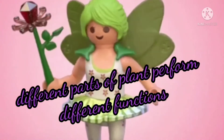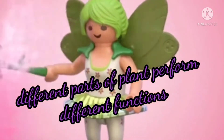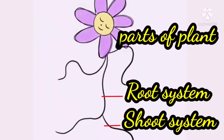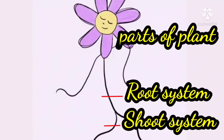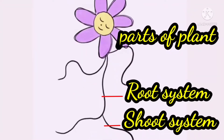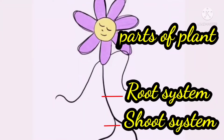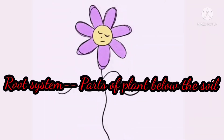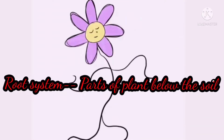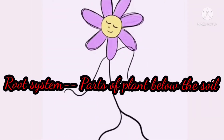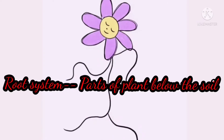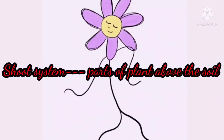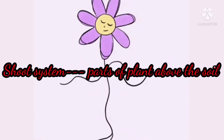Different parts of plants perform different functions. Parts of plants are classified as root system and shoot system. Root system includes parts of plants below the soil. Shoot system includes parts of plants above the soil.